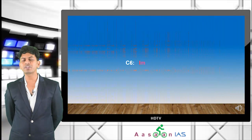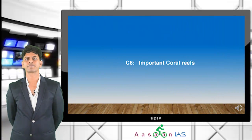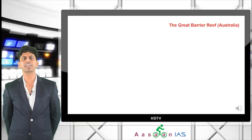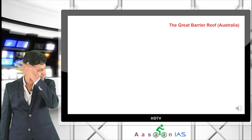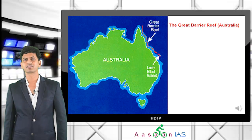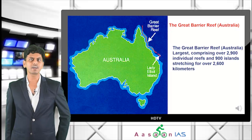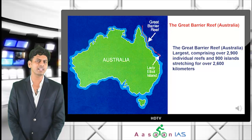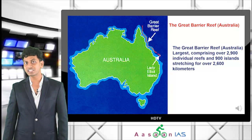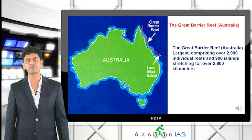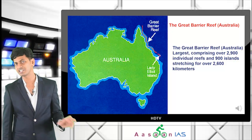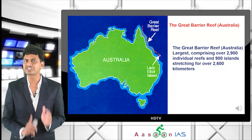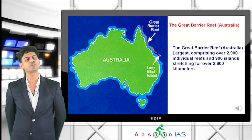The Great Barrier Reef in Australia is the largest coral reef in the world, comprising over 2,900 individual reefs and 900 islands stretching over 2,600 kilometers. The key point to remember is that the Great Barrier Reef is in Australia and is the world's largest.